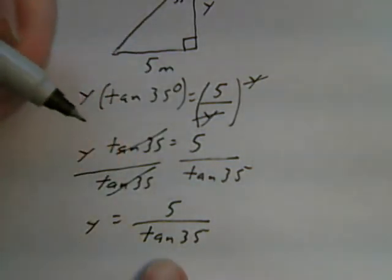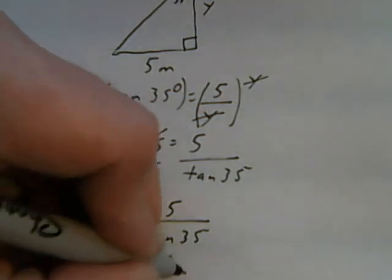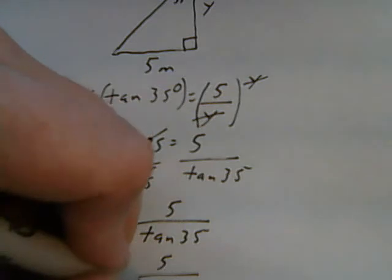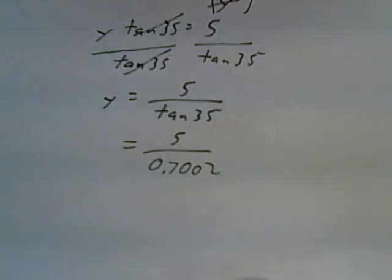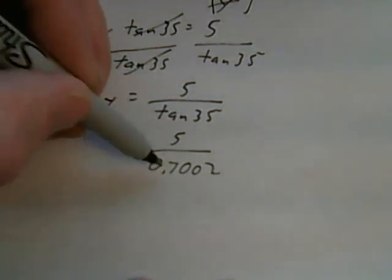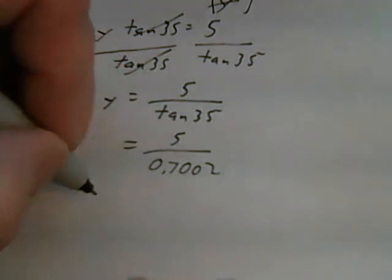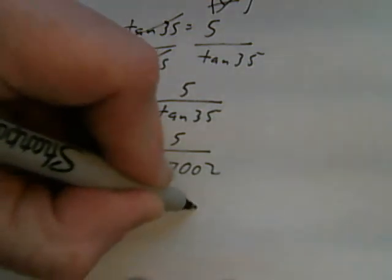Now, if I plug tan 35 into my calculator, I'm going to get 5 divided by 0.7002. 0.7002 is the rounded value for the tangent of 35 degrees. So now, if I divide 5 by 0.7002, I'm going to get 7.1 meters.